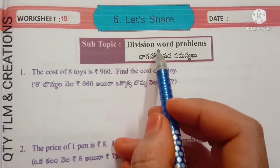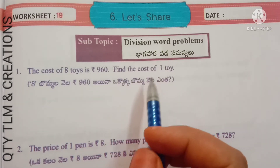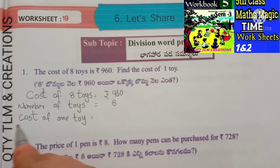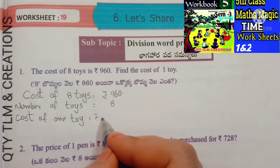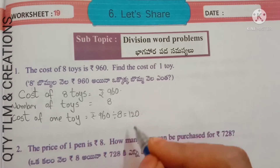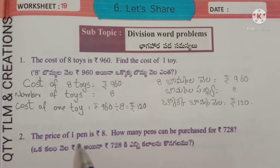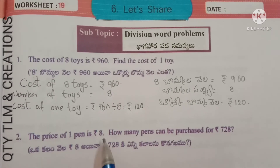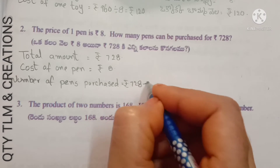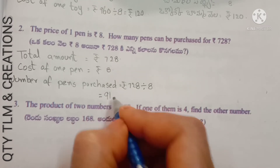Next, worksheet number 19, subtopic: division word problems. First question: the cost of 8 toys is 960 rupees. Find the cost of 1 toy. Cost of 8 toys = 960 rupees. Number of toys = 8. Cost of 1 toy = 960 divided by 8 = 120 rupees. Next question: the price of 1 pin is 8 rupees. How many pins can be purchased for 728 rupees? Total amount = 728 rupees. Cost of 1 pin = 8 rupees. Number of pins = 728 divided by 8 = 91 pins.